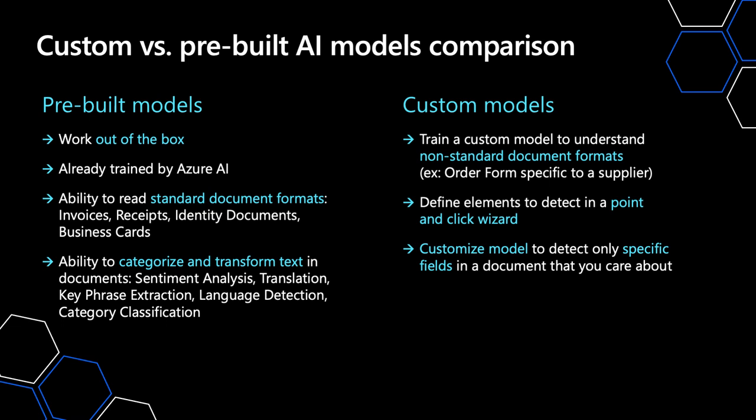Pre-built models are already pre-trained by Azure AI and they work out of the box. They're able to read standard document formats like invoices, receipts, identity documents, or business cards. On the other hand, if you want to process a specific document type unique to your business function or supplier, you'll want to train a custom model to understand that specific document structure and extract only the specific fields that you care about.